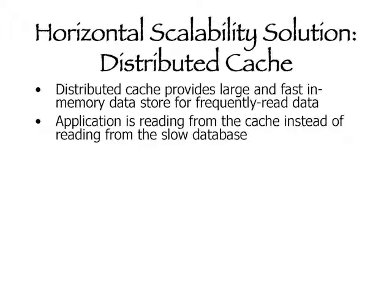The solution to this problem is distributed caching. A distributed cache is essentially a large in-memory data store that holds all frequently read information. Distributed caches can have sizes exceeding a typical JVM by 10 or 100 times — you can have a cache of a terabyte if you want. The application benefits because instead of going to the database, it goes to the in-memory cache and reads from memory.